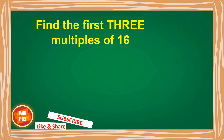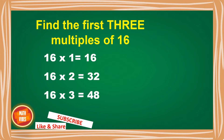Now let's quickly come to the questions. Questions will be of this form: find the first 3 multiples of 16. So what we will do is write down the table of 16. 16 ones are 16, 16 twos are 32, 16 threes are 48. Since we want to find only the first 3 multiples of 16, we have multiplied 16 by 1, 2, and 3 only.